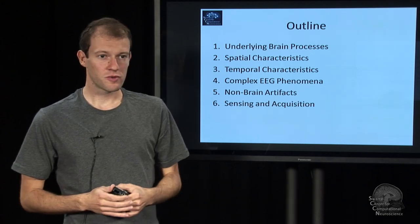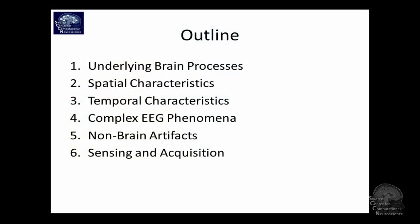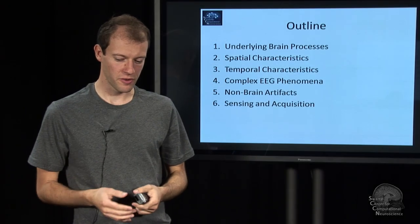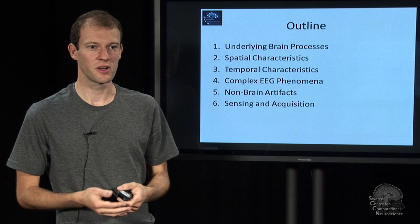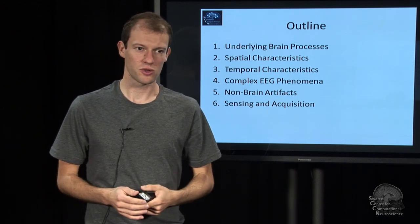And then we'll switch over to complex EEG phenomena, which are composed of multiple co-occurring events and so on. And lastly, we'll dip into artifacts also. So you pick them up with EEG, but they are not generated by the brain. They are generated by muscles and so on. And it's important to deal with those because they are actually very, very strong noise sources.